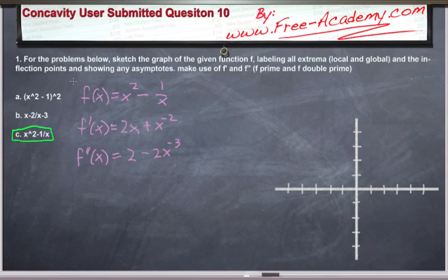For starters, if you take a look at the function, because we have the 1 over x, if we have x equal to 0, we're going to get a 0 in the denominator of this term, which is undefined. So we're going to have a vertical asymptote at x equals 0 to start out with.